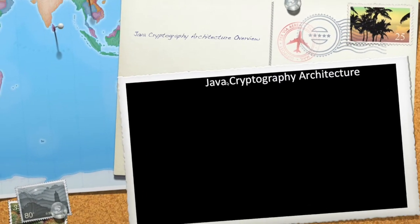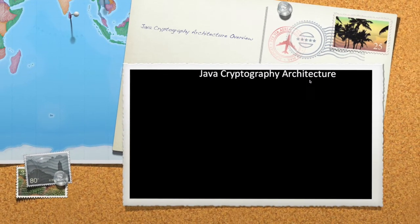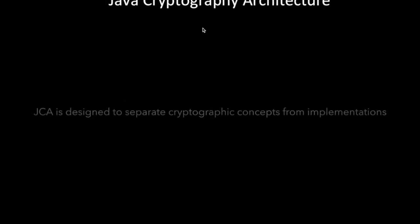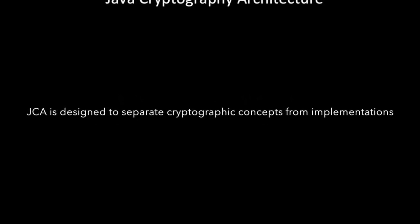Welcome to the Java Cryptography Architecture video. In this video we'll get an overview of JCA and JCE. JCA stands for Java Cryptography Architecture and JCE stands for Java Cryptography Extension.